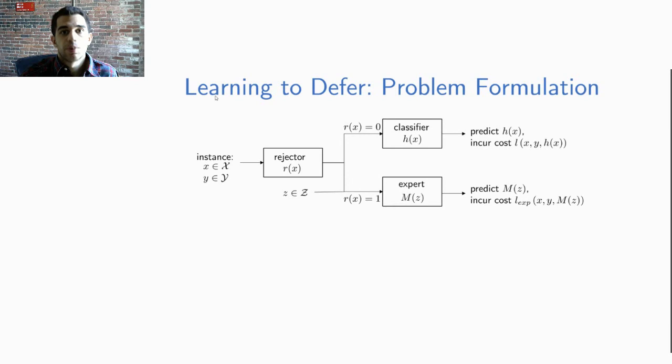So, let us start by formalizing our problem. We have a covariate space X and the label space Y. We want to learn a rejector R of X. That is what we refer to as our deferral module that will decide whether to route the decision to either a classifier if the output of the rejector is zero. If the decision is to route to the classifier, the classifier predicts h of X and we incur an algorithm loss L_A that depends on the covariate X, label Y, and algorithm prediction h of X.